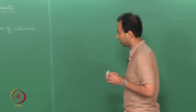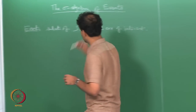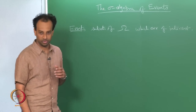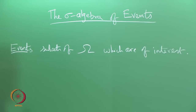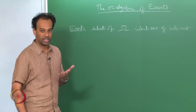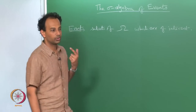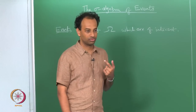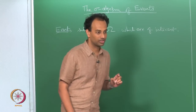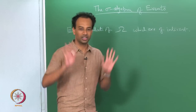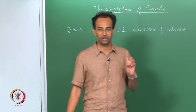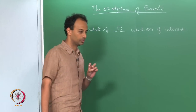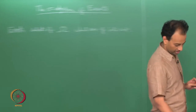It turns out that to do interesting probability theory — to build a rich theory — you need a little more than the structure of an algebra. All of probability theory works with a slightly stronger structure known as a sigma algebra. A sigma algebra is a collection of subsets of omega which are not just closed under finite unions, but closed under countably infinite unions. Let me write down the definition of a sigma algebra.